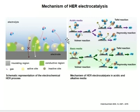This is the mechanism of HER (hydrogen evolution reaction). The hydrogen evolution reaction process under acidic conditions can usually be described by three reaction steps: the Volmer, Heyrovsky, and Tafel steps.